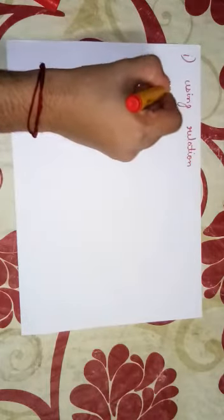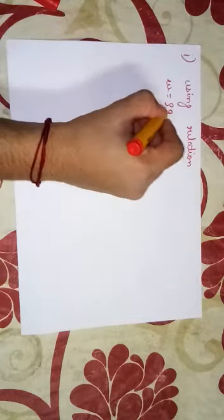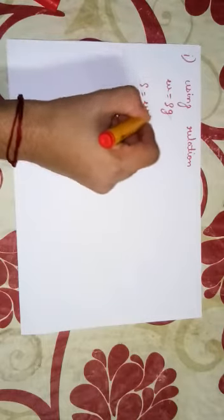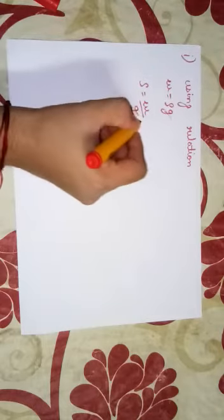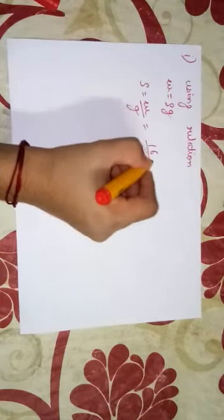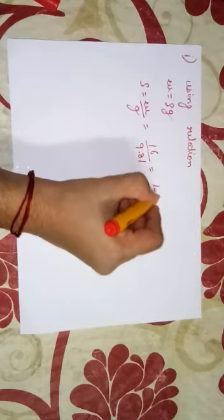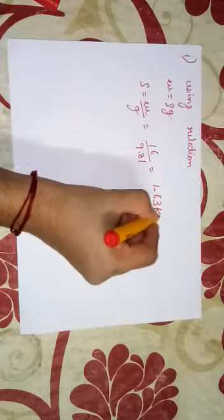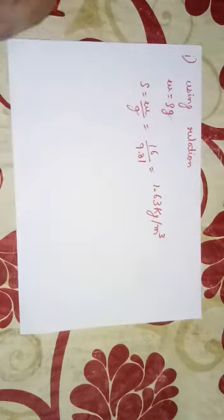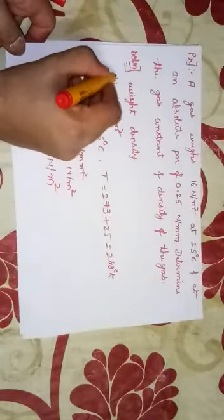Using relation w is equal to rho g, rho is equal to w by g. w given is 16 and g value is 9.81. Therefore, rho equals 1.63 kg per meter cube.